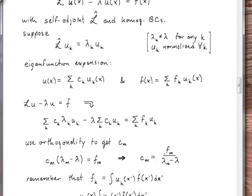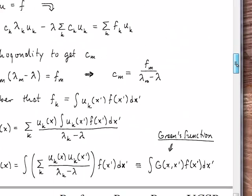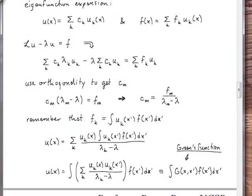Recalling what the f_m coefficients are — they are the expansions of the inhomogeneous term. Writing out the definition of that expansion coefficient, it's an inner product with the eigenfunction: we multiply the conjugate eigenfunction by the function f and integrate over the interval from a to b, where the homogeneous boundary conditions are applied. Putting all of this together and writing out the original expansion — U_k of x multiplied by C_k, with C_k taking that expression — gives us the solution written as an expansion in eigenfunctions. The expansion coefficients also involve integration over the eigenfunctions.